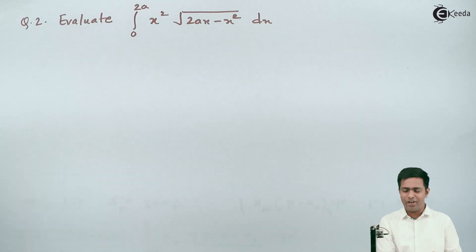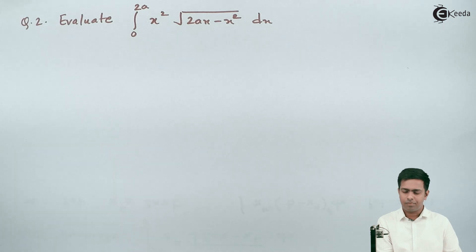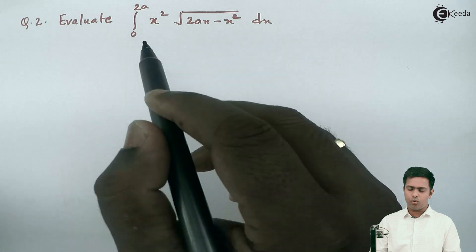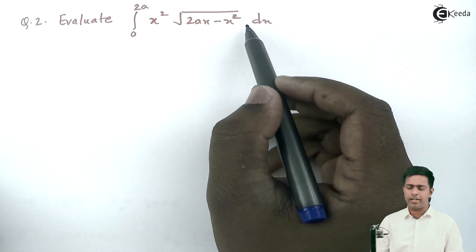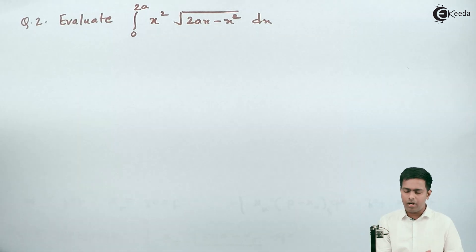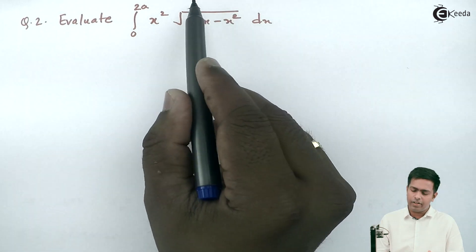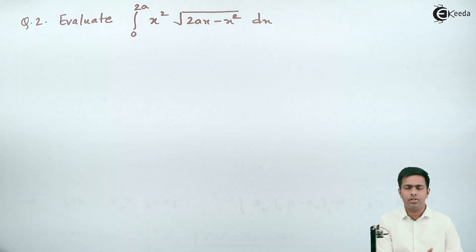Hi friends. Here we are going to see the integration based on beta function. We have to evaluate the integration from 0 to 2a of x squared times the square root of 2ax minus x squared dx. Before solving this, we'll look at the pattern of the integration and decide the substitution.